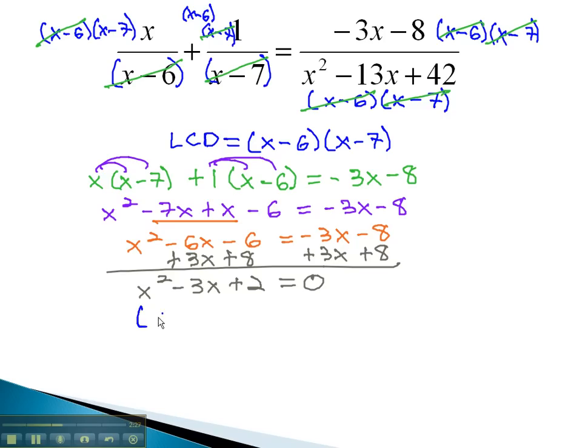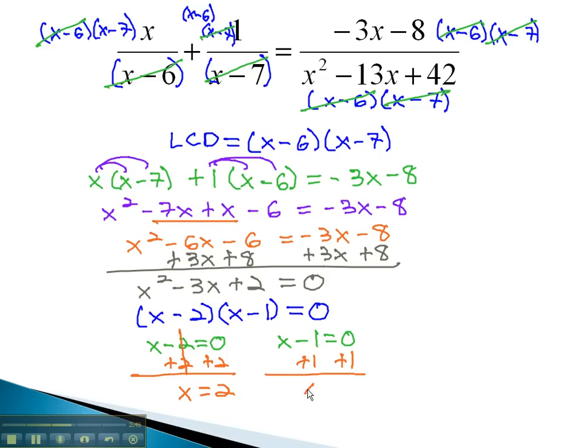Sure enough, this factors nicely to x minus 2 times x minus 1, and so we can set each factor equal to 0, x minus 2 equals 0, and x minus 1 equals 0, in order to quickly solve and find our two solutions for x. Adding 2, x equals 2. And adding 1, x equals 1.